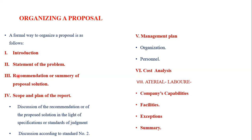Point four is the discussion of recommendations of the proposed solution in light of the specifications or standard of judgment. The standard of judgment means: if you are making software, what is the quality and standard of that software? Everything has a standard — food, clothing, construction. Just as there is a quality assurance department that checks the quality of clothing or food, the same applies to software engineering and civil engineering projects.